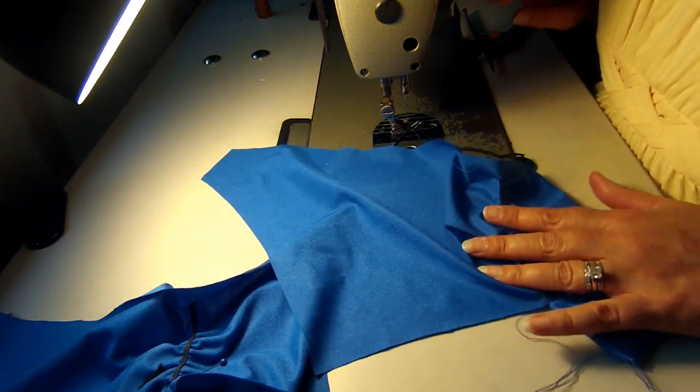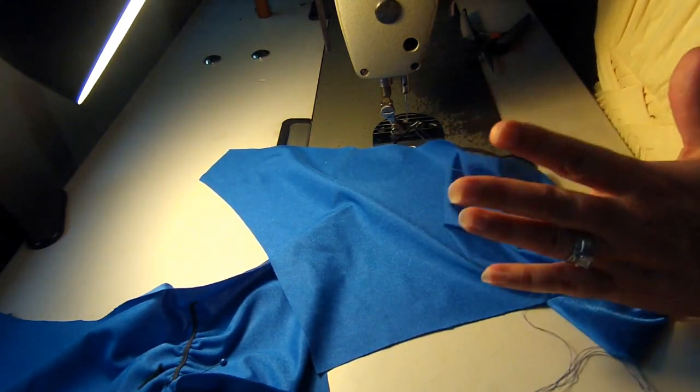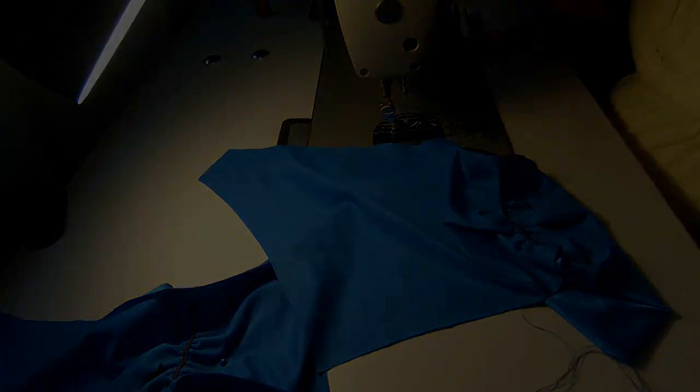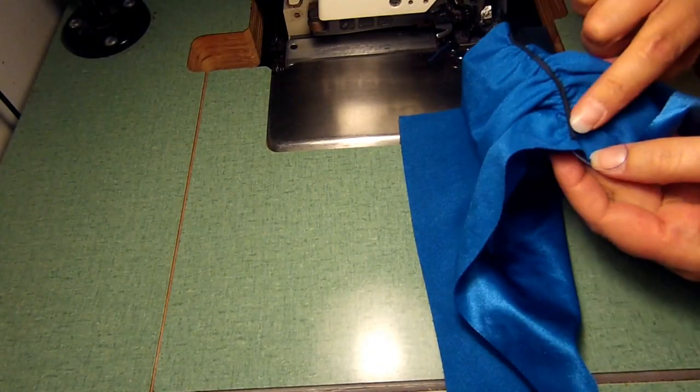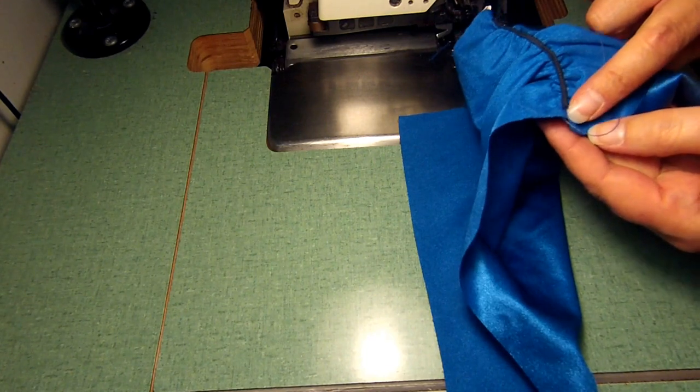Now that's it for the straight stitch machine. We're going to move over to the serger. Now we are at the serger and you'll notice that I cut off about a half an inch where I pulled the elastic through to make the pucker on both sides.